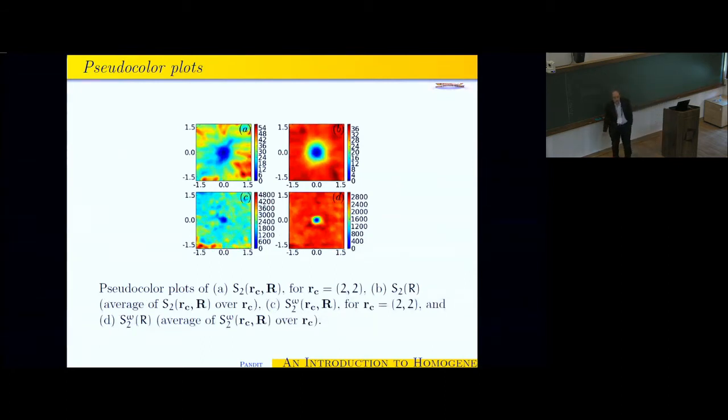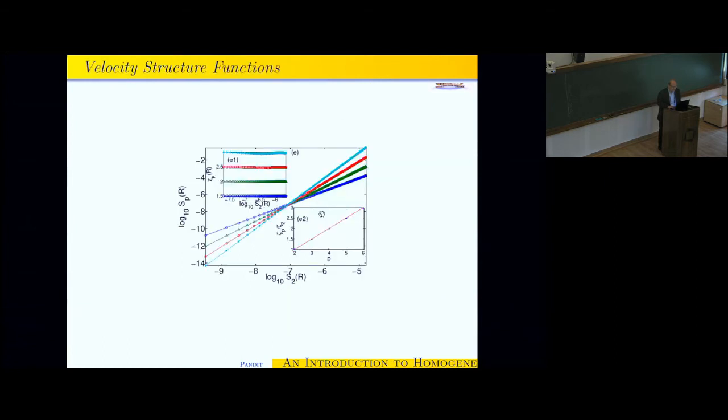And then you can obtain these structure functions that I told you. So they depend on various things. They depend in particular on the separation. So over here, you see, for this two-dimensional case, the second-order structure function, and it depends on some center r, but to get better statistics, if you average over the center, then you can get these nice plots. And these are only good pictures. You can quantify it by numbers.